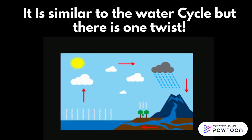The temperature of the atmosphere has to be below 39 degrees Fahrenheit. This is because when water is frozen it becomes ice, so when the water in the clouds freezes, they turn into ice crystals — also known as snow.